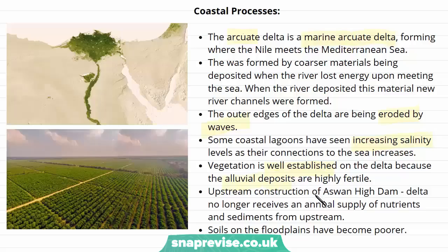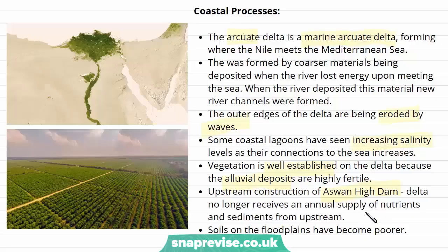Vegetation is really well established on the delta because of alluvial deposits — which are deposits from rivers — that make the land highly fertile. However, upstream there was the construction of the Aswan High Dam on the River Nile. The delta now no longer receives as much minerals and nutrients from the river because they're being stopped by the dam. This is having significant consequences on the delta, and they're having to bring in fertilisers to keep the land as fertile as it used to be. Overall, the soils on the floodplains have become poorer in terms of mineral and nutrient quality.